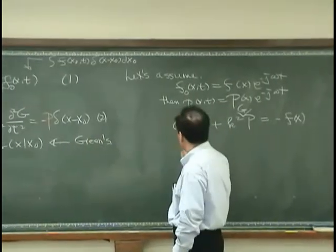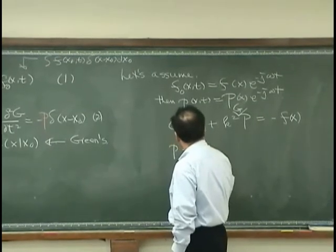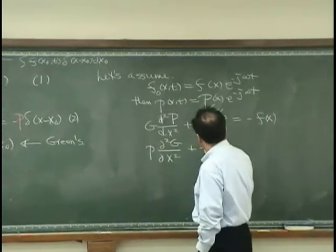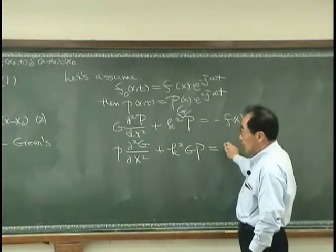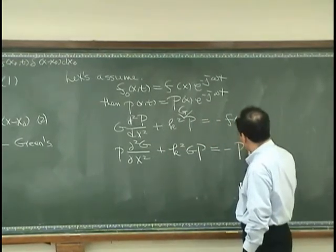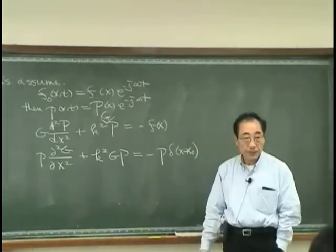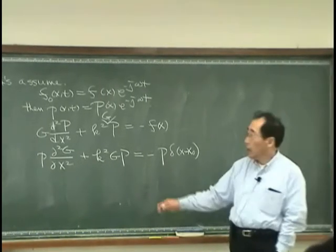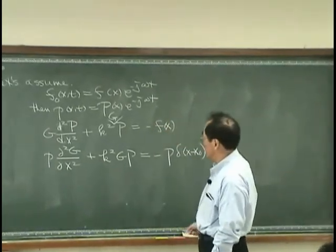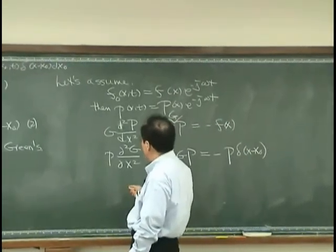And this one is p d²g/dx². And similarly, I have k²gp, that is minus p δ(x-x₀). Then I subtract out. Then what I will have, this will go away.